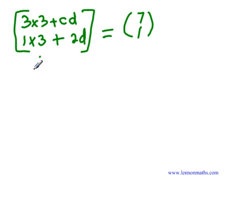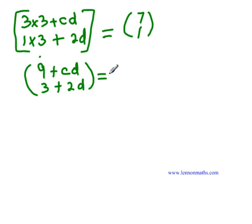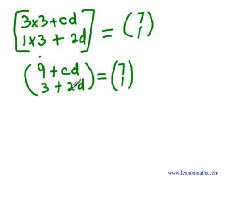Let's simplify. We have 3 times 3, which gives us 9, plus CD — that cannot be simplified further. Then 1 times 3 is 3, plus 2D. These are equal to 7 and 1. We recognize we cannot add 9 to CD because they are unlike terms, and we cannot add 3 to 2D either. Looking at the structure: it's a 2 by 1 matrix on each side.